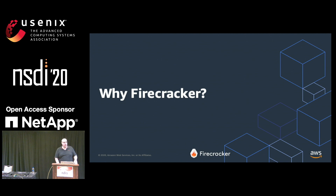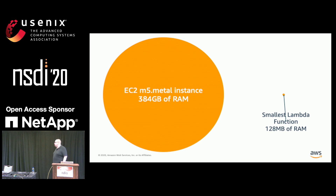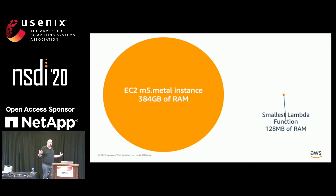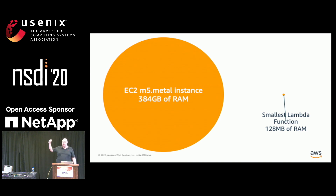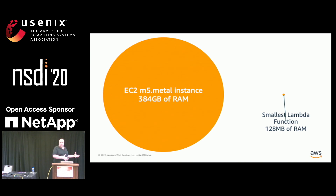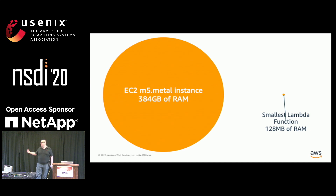So why Firecracker? Why did we do this? Well, our core problem — or our core opportunity — is multi-tenancy. We have this big circle: an EC2 M5 Metal instance, a pretty normal piece of hardware, with 384 gigs of RAM and 48 cores. The smallest Lambda function, on the other hand, is 128 megabytes. So instead of buying a 128-megabyte RAM server, what I want to do is take the 384-gigabyte server — which is a nice sweet spot in my economics curve — and pack thousands, in this case about 3,000 or slightly more because of soft provisioning, into a machine.